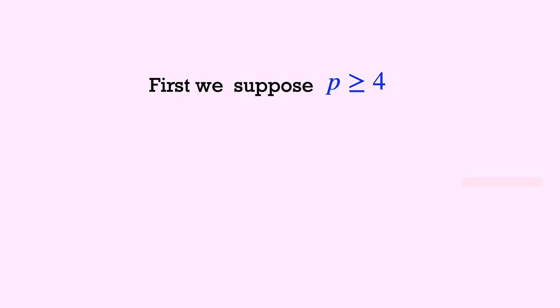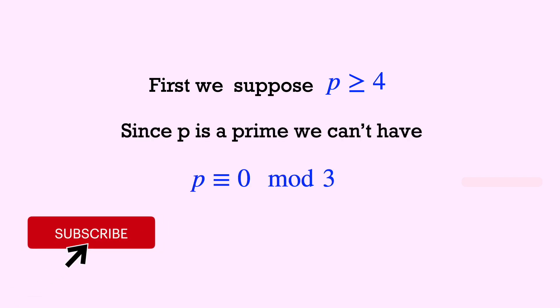First we'll assume p is greater than or equal to 4. Since p is a prime number, 3 cannot divide p. That is, p cannot be congruent to 0 modulo 3, which means the remainder on dividing by 3 is 0.